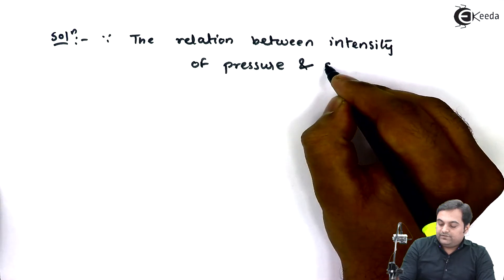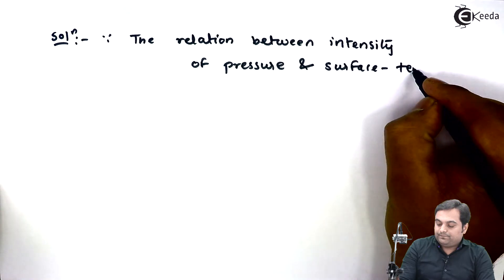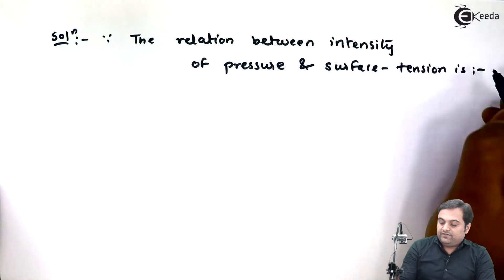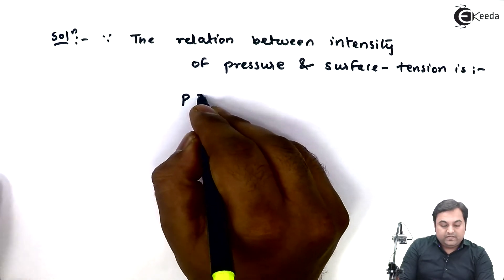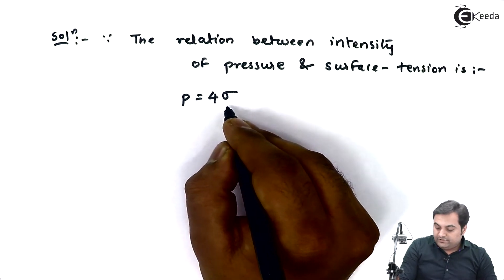The relation is P equals 4 sigma upon d.